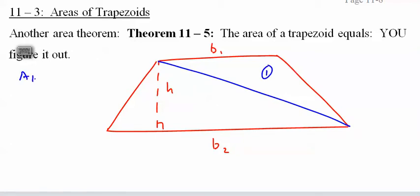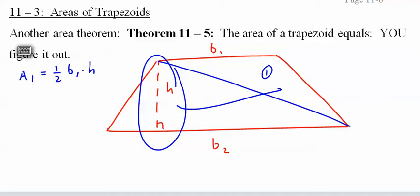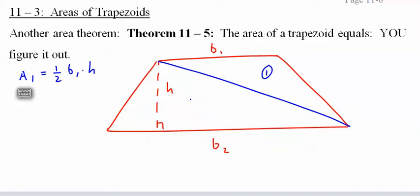The area of that is one half the base, and the base is base one, times the height. You might say, well the height's out here. Yeah, think about it. If I move it over here it's in the same spot. It's still a height. It'll still go from base one to base two, and that's where the triangle goes from. So that's the area of that triangle.